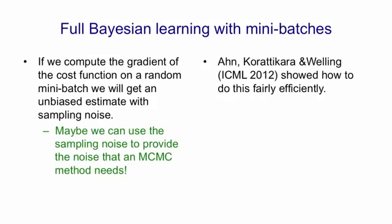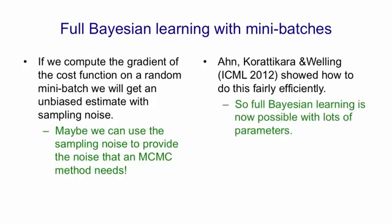Recently, Welling and his collaborators made it work nicely so that they could fairly efficiently get samples from the posterior distribution over weights using mini-batch methods. This should make it possible to use full Bayesian learning for much larger networks where you have to train them with mini-batch to have any hope of ever finishing training them.